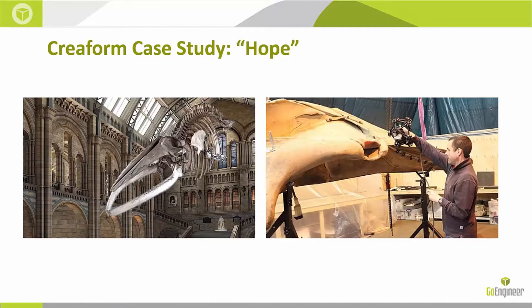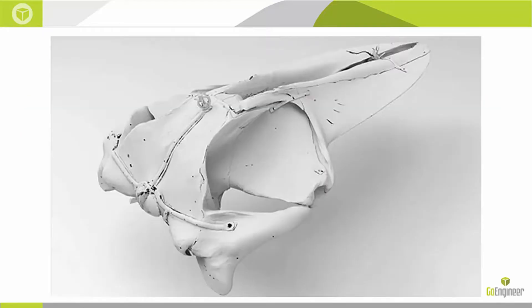Here's a real-world example of 3D scanning in archaeology — this was for the Natural History Museum in London. The objective was to 3D scan the skull of a blue whale named Hope before the museum put it on display in the exhibit hall. They wanted a scan of the skull in case something ever happens to it, so they can still study or examine it long after it's gone. They used a combination of 3D scanning with the MetraScan and photogrammetry to obtain a very accurate scan. Here is a 3D rendering of the skull after the data was processed — the detail is amazing.